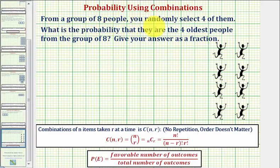From a group of eight people, you randomly select four of them. What is the probability that they are the four oldest people from the group of eight? And we're asked to give the answer as a fraction.